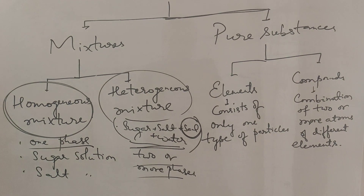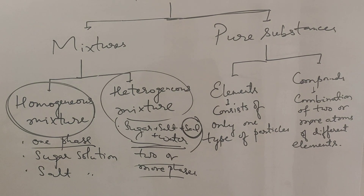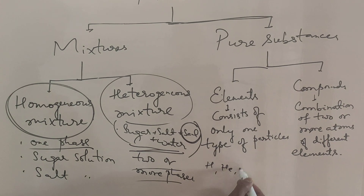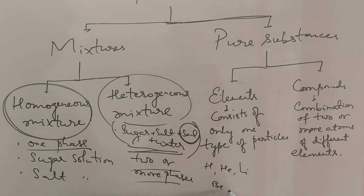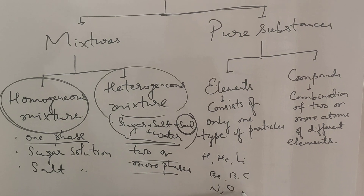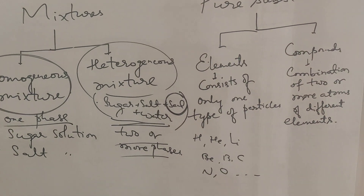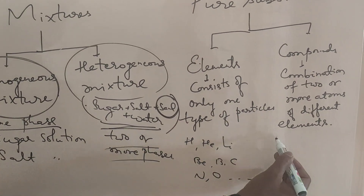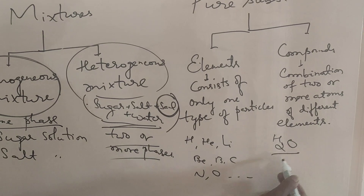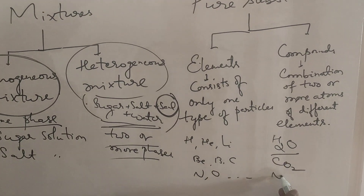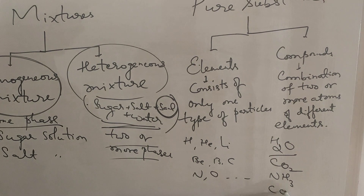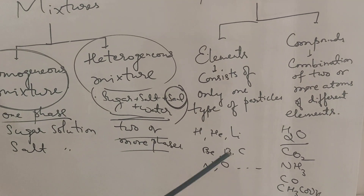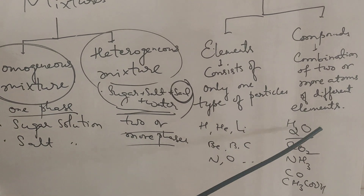Examples of elements include hydrogen, helium, lithium, beryllium, boron, carbon, nitrogen, and oxygen. Compounds are combinations of two or more atoms of different elements — for example, H2O (water), CO2 (carbon dioxide), ammonia, carbon monoxide, and acetic acid. When hydrogen and oxygen combine, they form water in a 2:1 ratio.